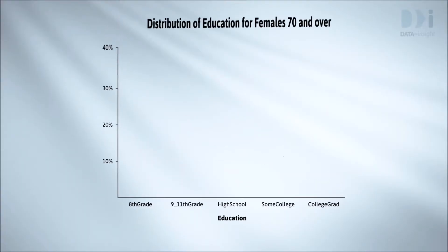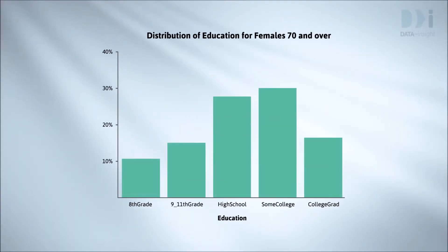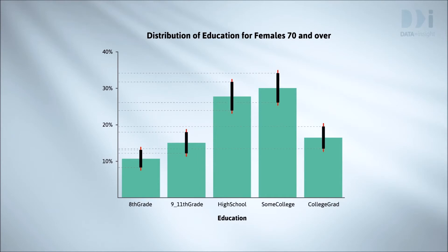This is a bar chart of education for just the people who are 70 or older. There are roughly 350 of them. Just as in the last video we've added confidence intervals and comparison intervals to allow for the uncertainty in estimating the true values due to sampling error. This has produced small lines around the tops of each bar.